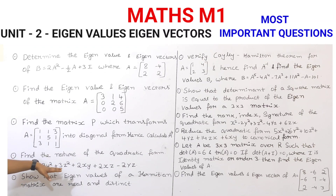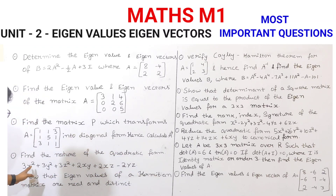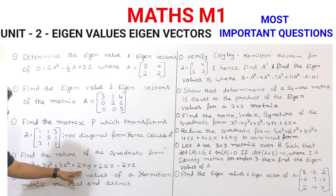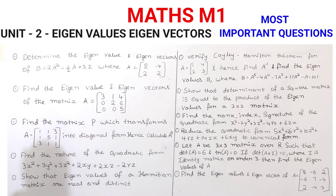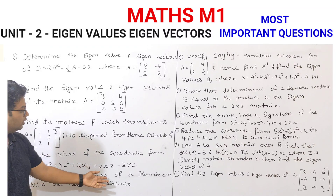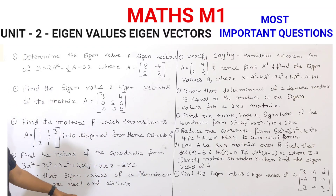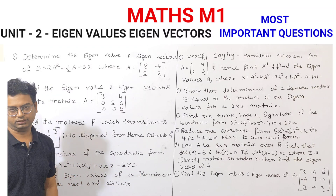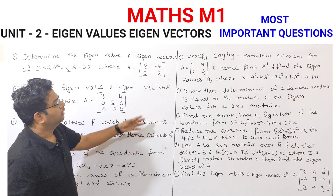Next, find the nature of the quadratic form: 3X squared plus 3Y squared plus 3Z squared plus 2XY plus 2XZ minus 2YZ. And next, show that Eigen Values of a Hermitian matrix are real and distinct. This is a theorem-based type of question.